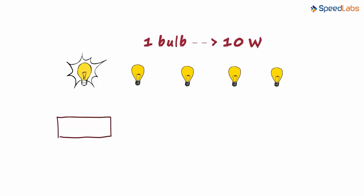Now think about it. What if 20 watts of power is supplied? Yes, two bulbs will light up. And if 30 watts of power is supplied? Three bulbs will light up.